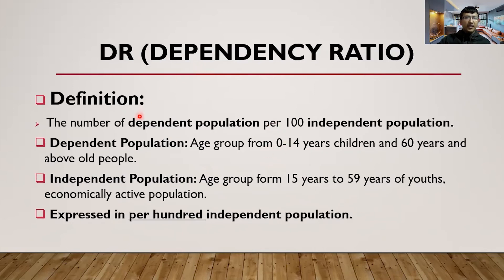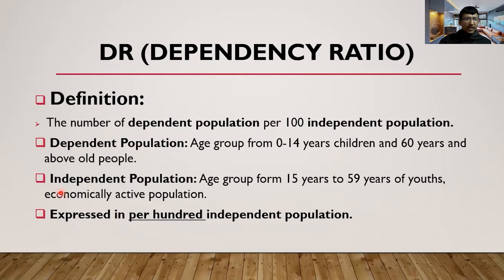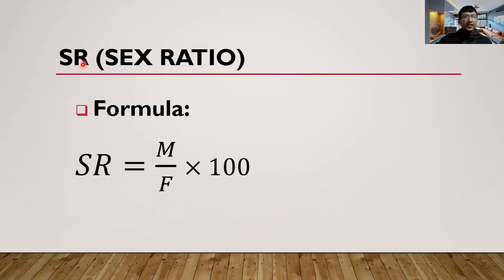The definition of Dependency Ratio is: the number of dependent population per 100 independent population. It is expressed per 100 independent population, or per 100 economically active population.